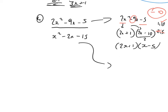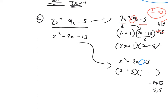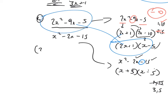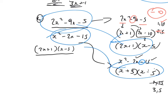Now the bottom: x squared minus 2x minus 15. The product is negative, so the signs will need to be different. Combinations for 15: 1 and 15, 3 and 5. We're going to use 3 and 5, giving x plus 3 bracket x minus 5 — because 3 times minus 5 is minus 15 and 3 minus 5 is minus 2. Bringing it back in: the top factorised to 2x plus 1 bracket x minus 5, and the bottom to x plus 3 bracket x minus 5. The (x minus 5) terms cancel, giving a final answer of 2x plus 1 over x plus 3.